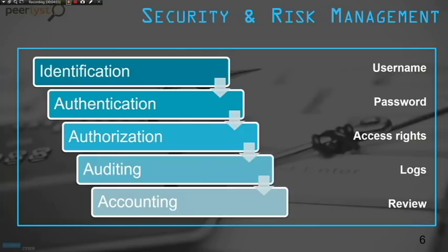Identification allows you to identify the requester through, for example, a username. Authentication makes sure the person is real through a password. Authorization ensures you have the right rights to access the corresponding data. Auditing records all logs, and the review is part of the whole risk management strategy allowing you to review the current situation.